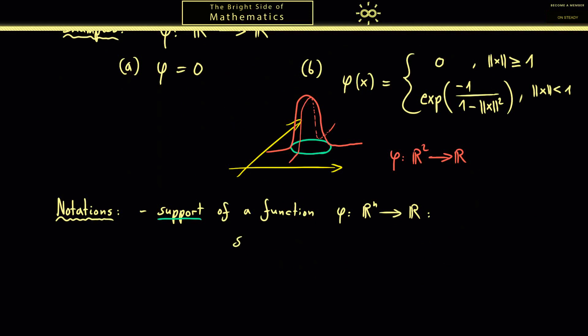As promised above I want to explain what the support of a function is. The notation one uses is just supp of the given function. And please be careful, this does not denote the supremum, always look if you find two p's or just one. The support is a subset of R^n and it is the smallest closed subset where the function is supported. More concretely it is the collection of all points in R^n where the function φ(x) is not zero.